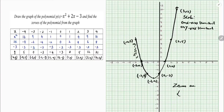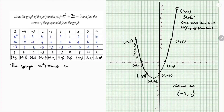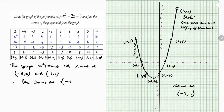Now we find the zeros. The zeros are wherever the graph cuts the x-axis. It cuts the x-axis at (minus 3, 0) and at (1, 0). Therefore the zeros of the polynomial x² + 2x - 3 are minus 3 and 1. In this way we find the zeros of a quadratic polynomial with the help of its parabola.